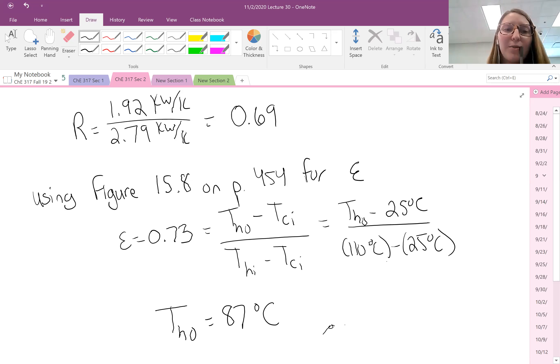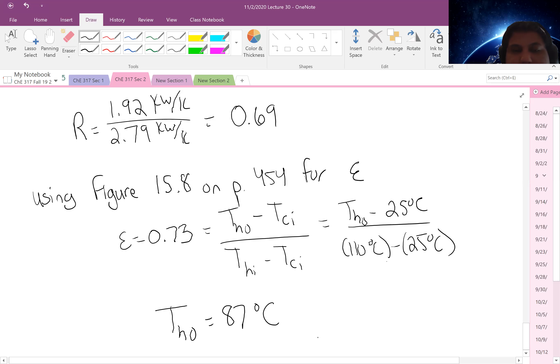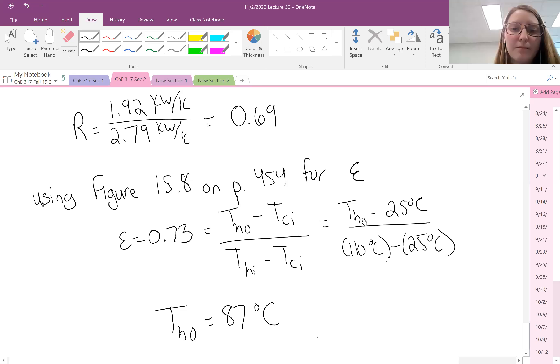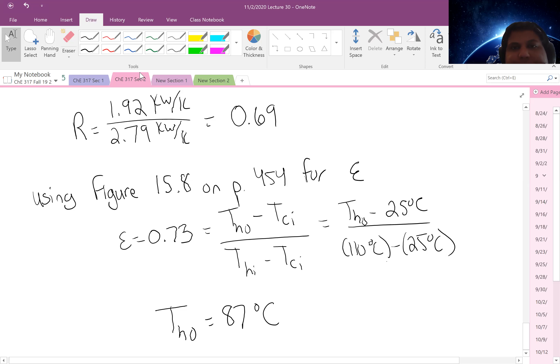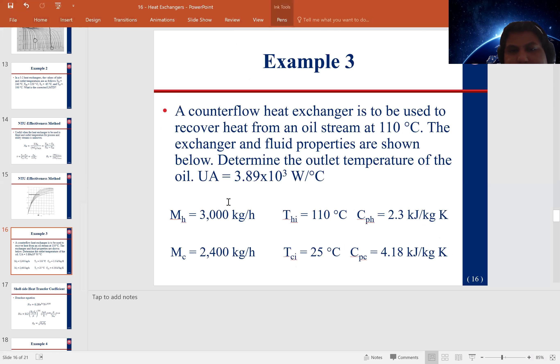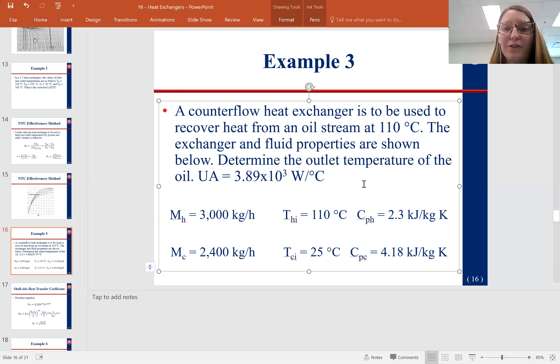Also, where did UA come from on the top of NTU? Where did what come from? UA. It was in the problem statement. Here, I'll show you. I guess I have an old version of the PowerPoint, so I missed that. Thank you. No problem. Yeah, this one is weird. I think when I originally put it in, it might have had like to the fourth or something, but the numbers didn't work out.